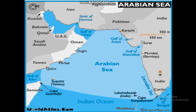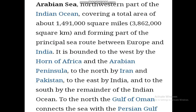Now it comes the map of the Arabian Sea. It is the northwest part of the Indian Ocean and is also known as the Sea of Oman. It is connected to the Red Sea via the Gulf of Aden, and to the Persian Gulf via the Gulf of Oman.